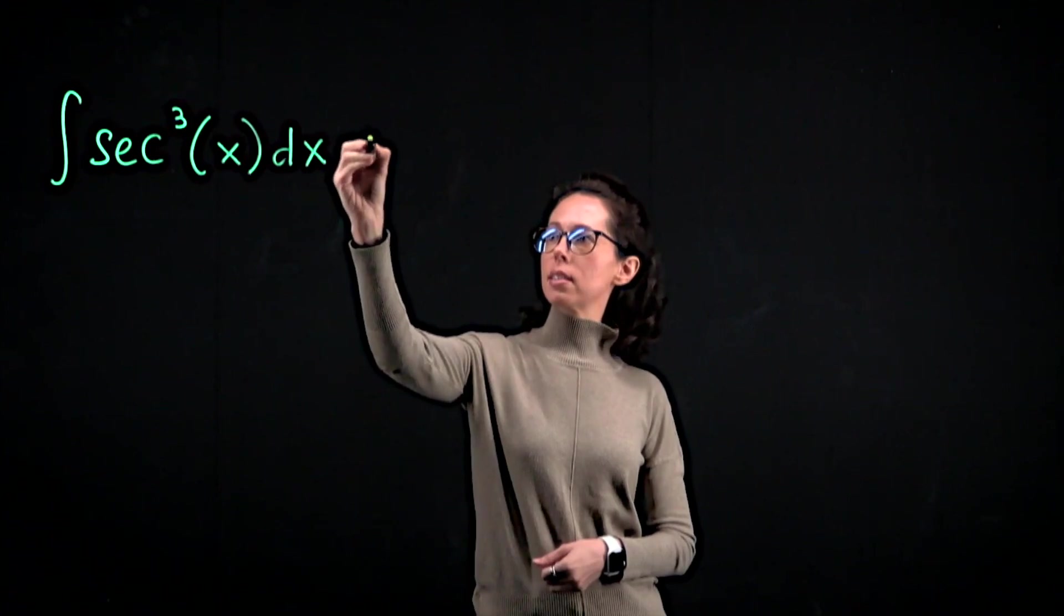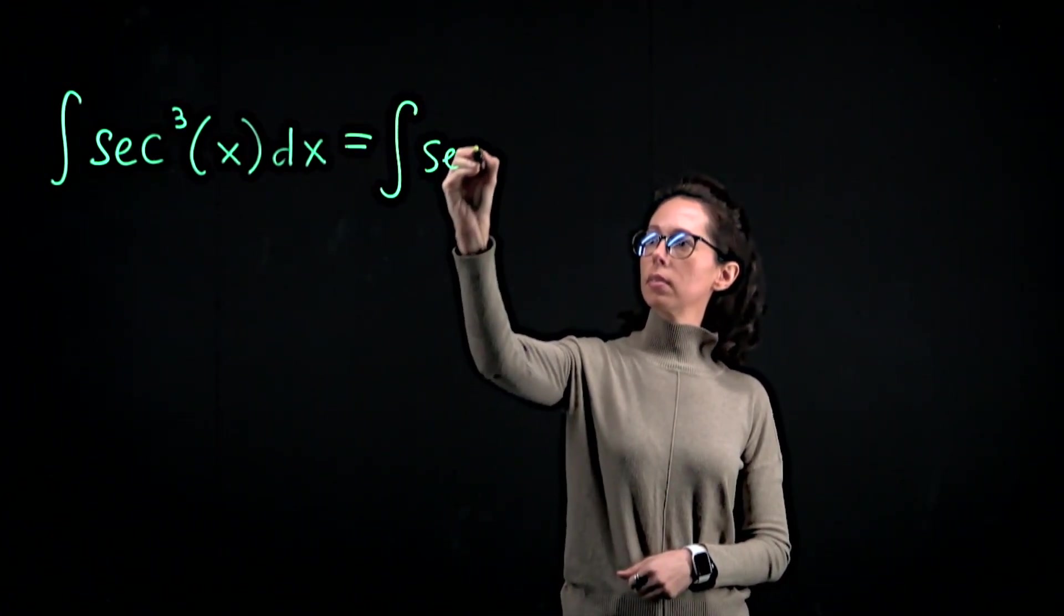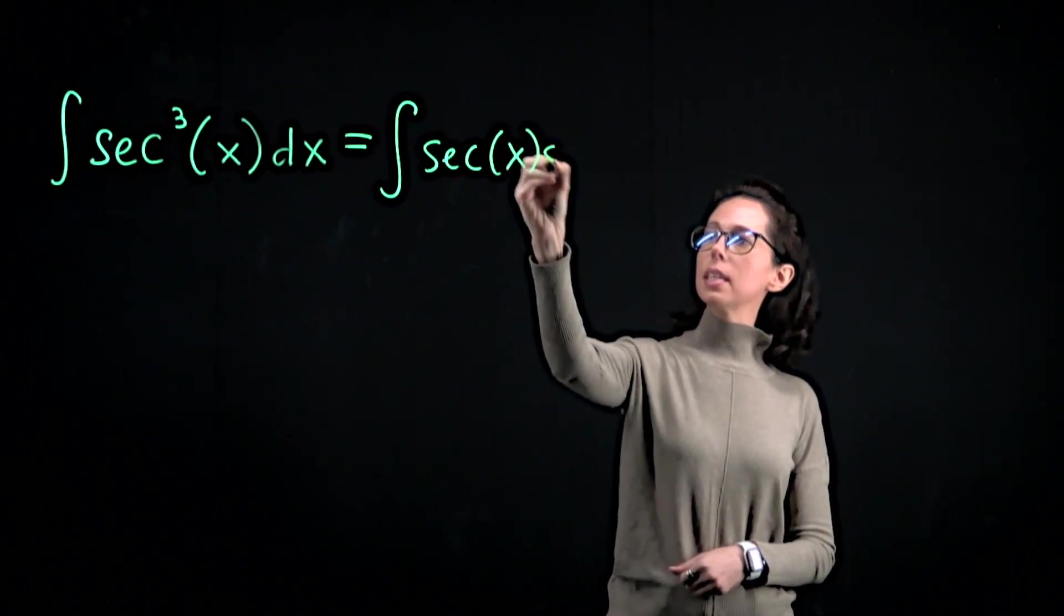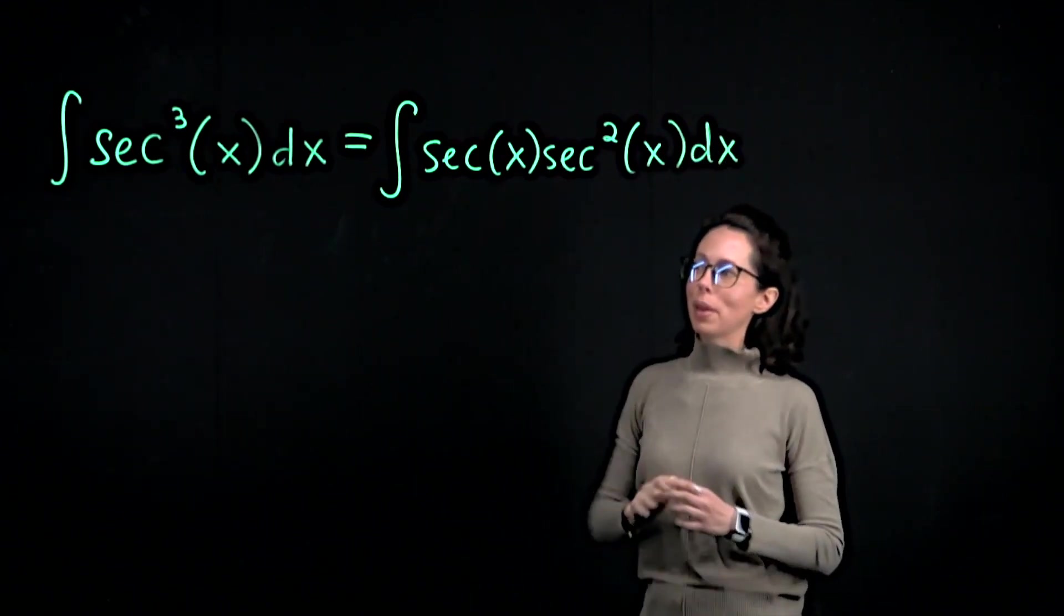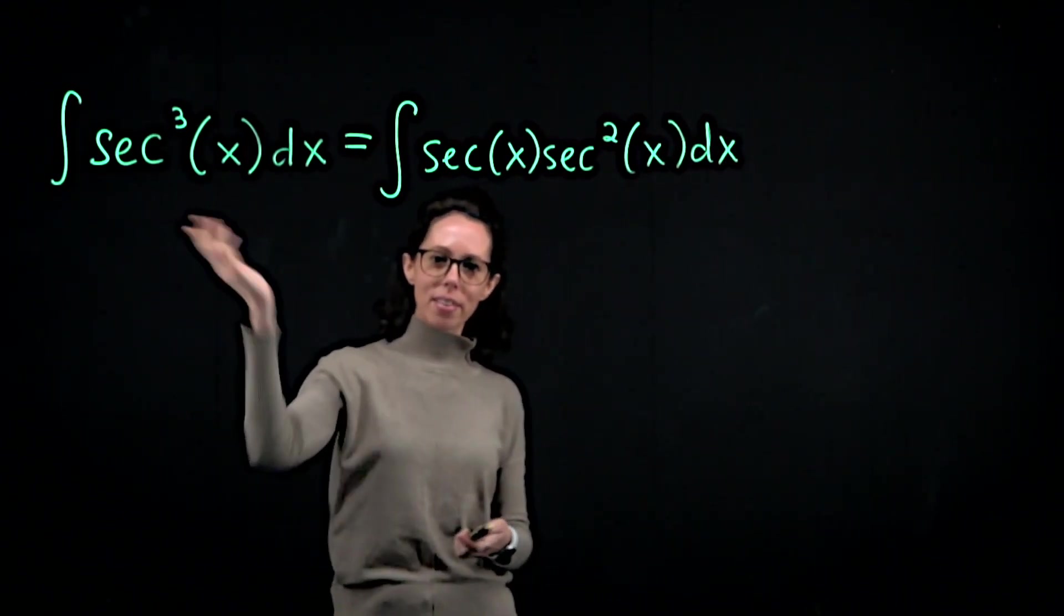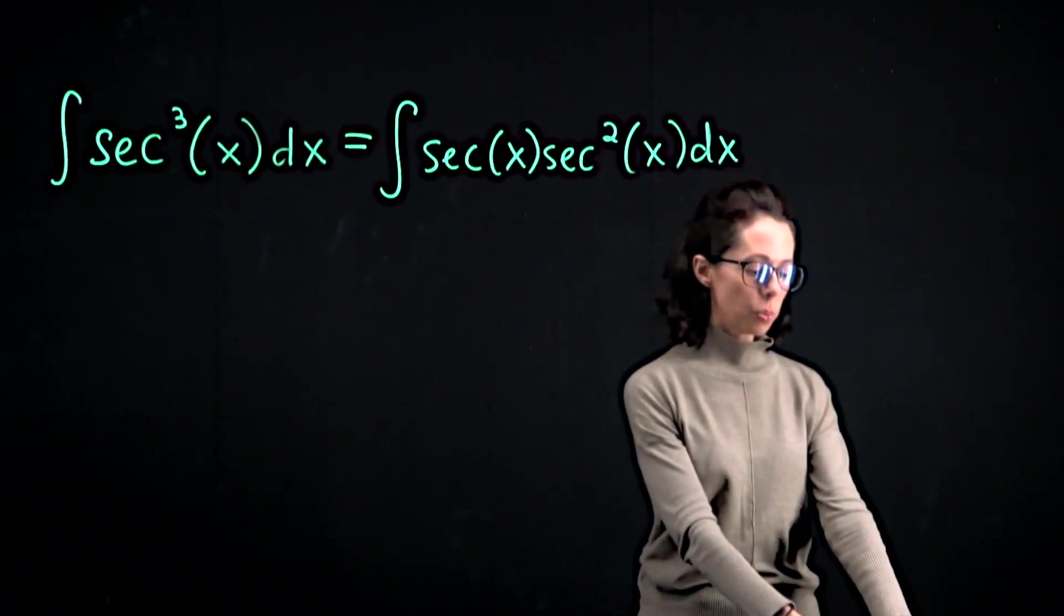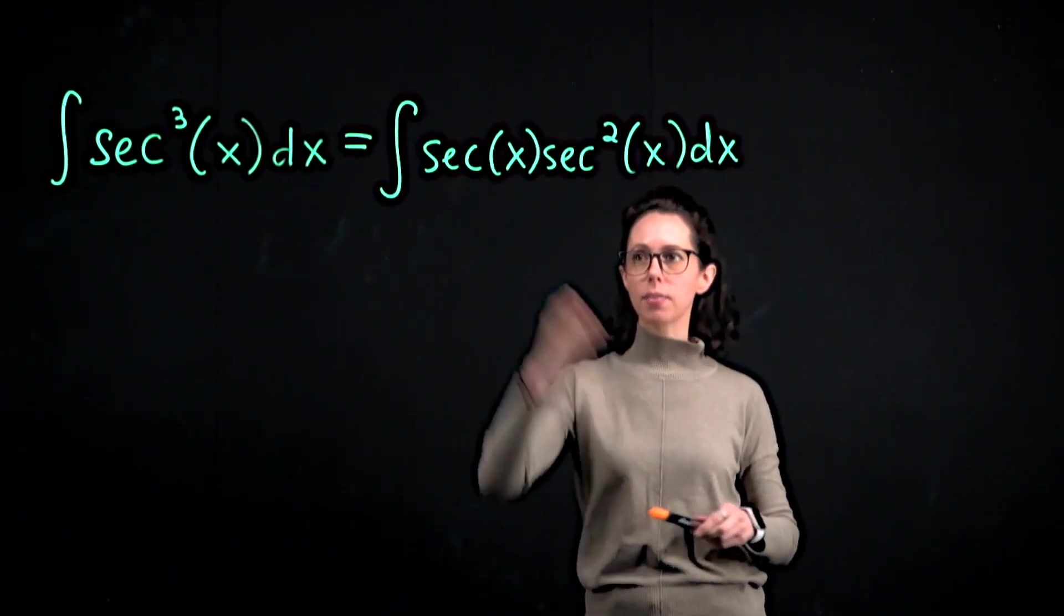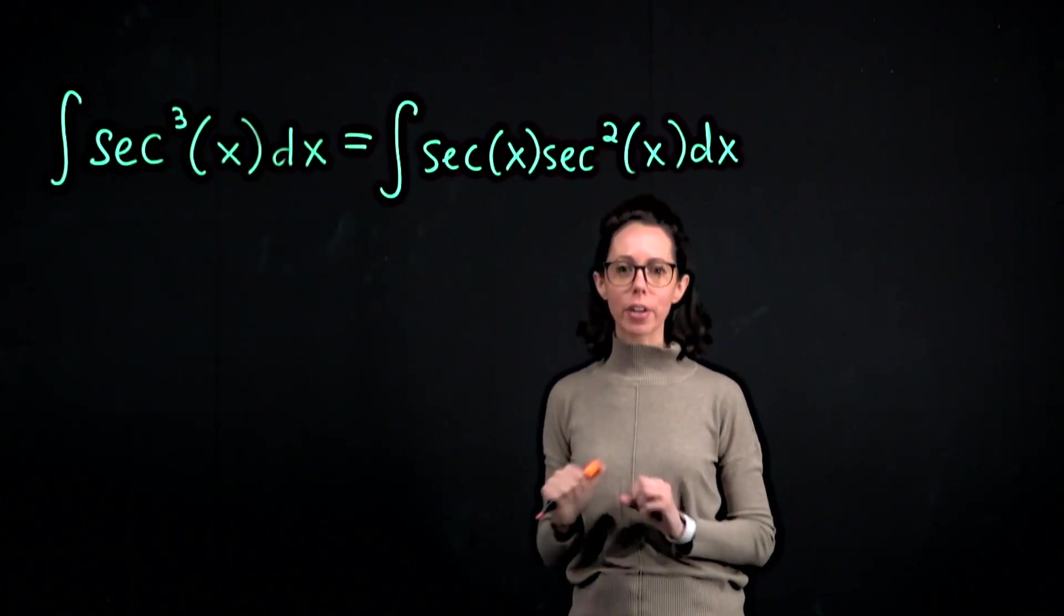So let me rewrite this as just secant of x times secant squared, because when you first look at this expression it's not obvious that there should be an integration by parts computation here. But in this way we now have the product of two expressions where we will set up integration by parts.